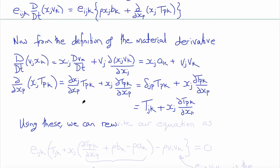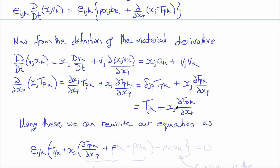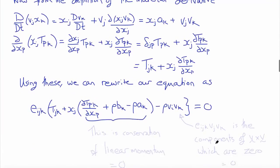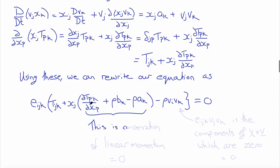Using these two expressions and substituting into the equation, taking E_ijk outside, we get E_ijk times T_jk plus X_j times (del T_pk / del x_p + rho B_k minus rho a_k) minus rho V_j V_k equals zero. The term multiplied by X_j is in fact the conservation of linear momentum, which equals zero, since those terms equal the inertial force.